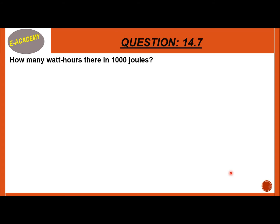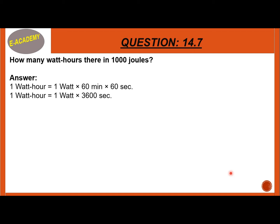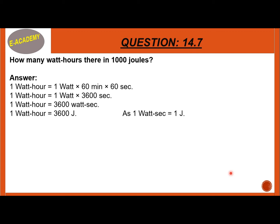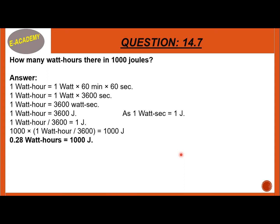Question 14.7: How many watt hours are there in 1000 joules? Since 1 watt hour equals 3600 joules, 1000 joules is equal to 1000 multiplied by 1 watt hour divided by 3600. So, 1000 joules contains approximately 0.28 watt hours.